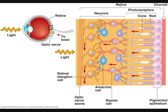Bipolar cells are the neurons whose dendrites the photoreceptors synapse with and whose axons synapse with retinal ganglion cells. When a photoreceptor absorbs a photon, it hyperpolarizes and stops releasing glutamate. The change is detected by the bipolar cells and the information is passed on to the ganglion cells.